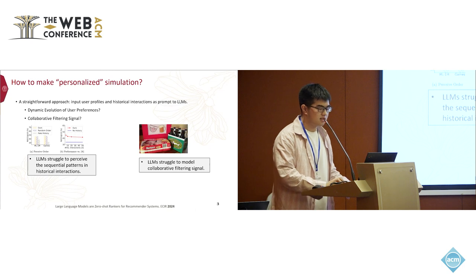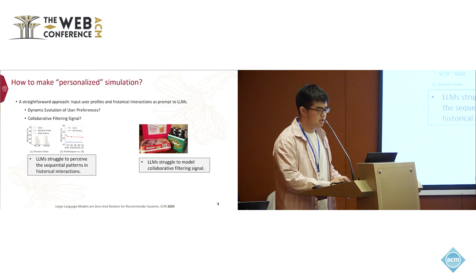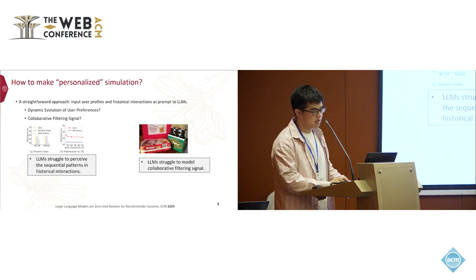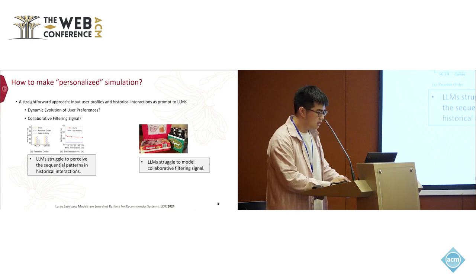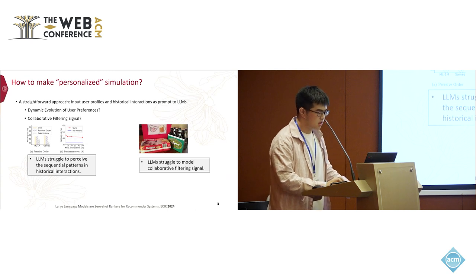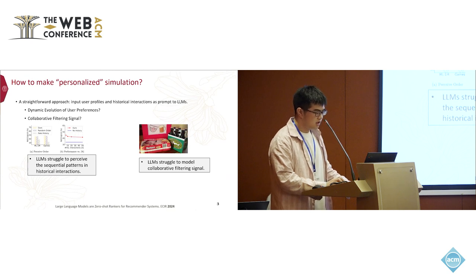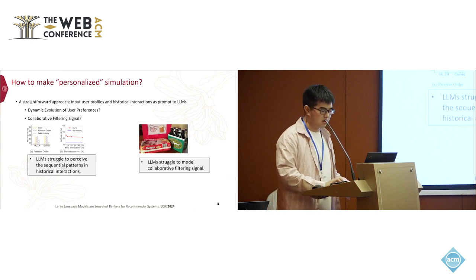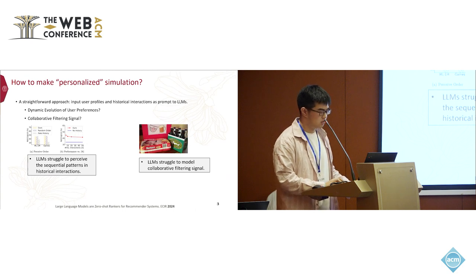Firstly, user preferences are not static — they evolve through interactions with the system. Our prior work has shown that large language models struggle to perceive sequential relationships in user historical interactions and fail to grasp dynamic evolution. Secondly, collaborative relationships in recommendation systems are significant signals. The collaborative relationship between users and items propagates through interactions, revealing that similar users have similar interests. Large language models lack domain-specific knowledge and may struggle with this concept. For instance, in a supermarket scenario, although there is a strong correlation between male customers buying beer and diapers, these items appear semantically unrelated to a large language model, making it challenging to recognize their connection.